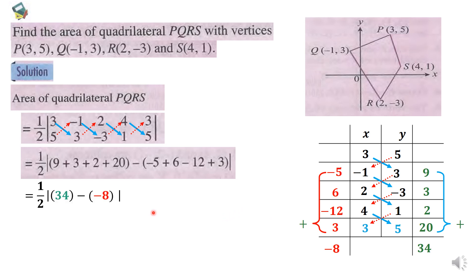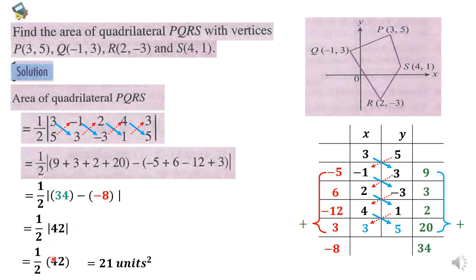Therefore, we have the modulus of 34 minus negative 8, divided by 2. Finally, the area of quadrilateral PQRS is 21 square units.